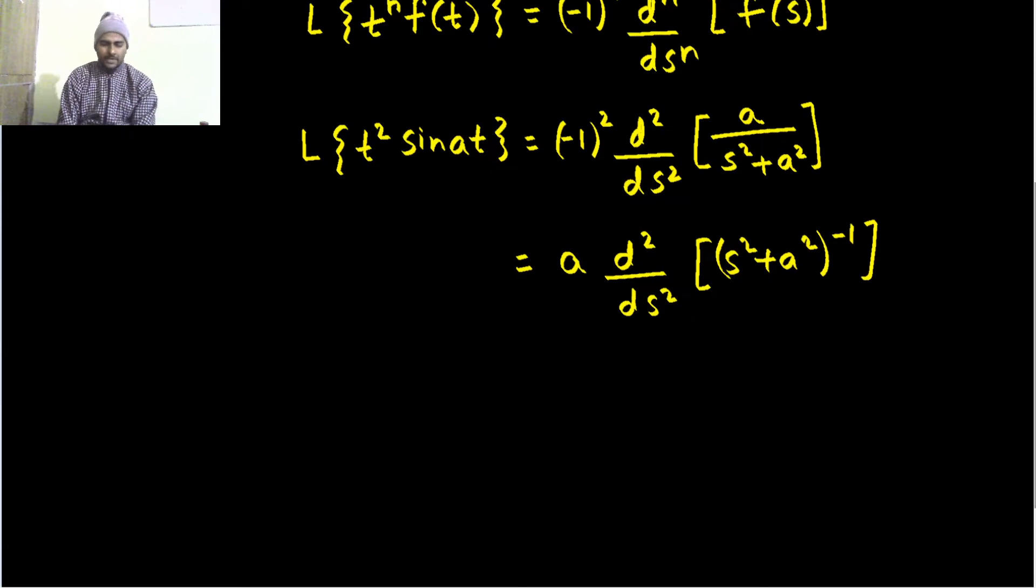we can take a out if possible because that is a constant s square plus a square power minus 1. Now, we can use the power rule which says, power will come in front and power will decrease by minus 1 in the same step. And by the chain rule, derivative of s square is 2s, derivative of a square is 0.